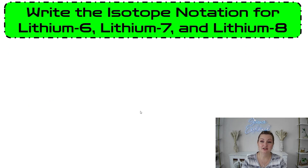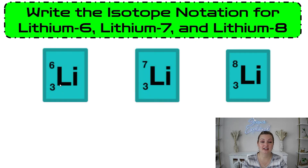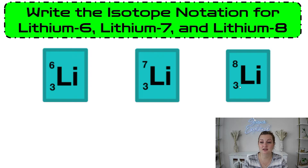Let's do an example. Write the isotope notation for lithium-6, -7, and -8. Go ahead and pause the video and try it out and check your answer. All right, let's go ahead and look at them. So we're going to start by writing the Li for lithium. The bottom number is the number of protons, or your atomic number, and that is 3. Lithium has three protons and it forever will. So 3 is on the bottom and that's not going to change — it's going to stay consistent with every lithium there is, no matter which isotope it is.